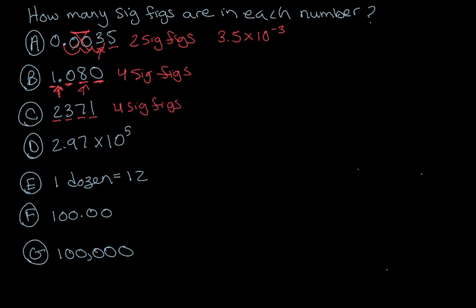For D, we only look at the decimal part — we do not look at the exponential part to figure out the number of significant figures. So here we have three non-zero numbers, so it's three sig figs.